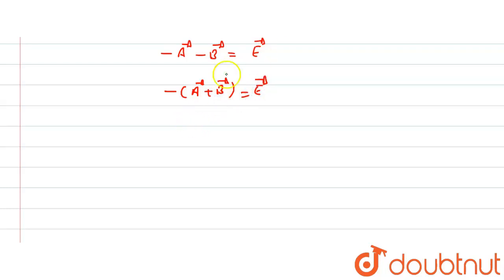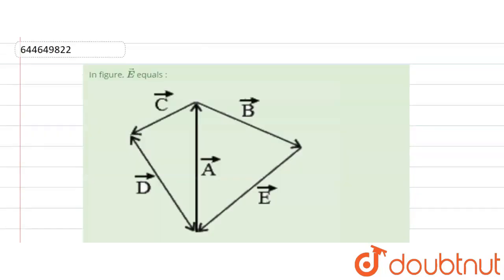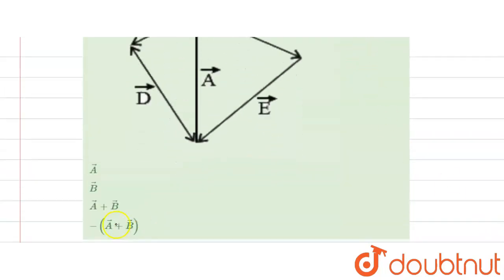So here e vector is equal to minus of a vector plus b vector. This is the solution of this question. Now check the option which one is the right, so that means that the fourth option is the right.